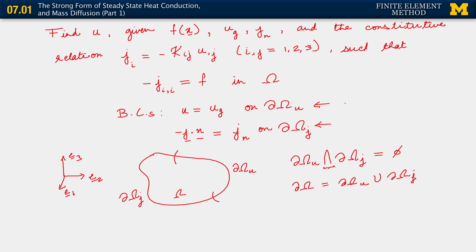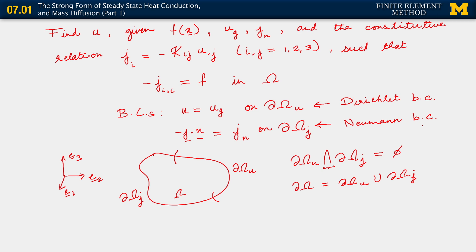When we go back to the boundary conditions, we've specified u = u_g on one part of the boundary — recall from our treatment of the problem in one dimension, that is the Dirichlet boundary condition. The other boundary condition is our Neumann boundary condition. Now let's go back and talk about the other quantity we introduced without much fanfare: j.